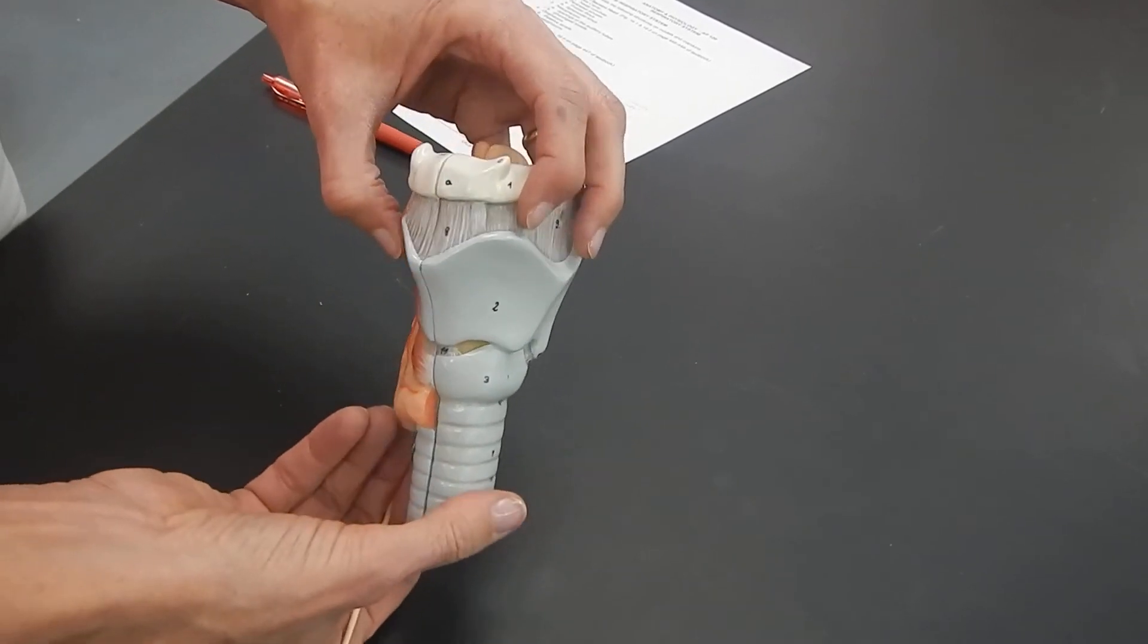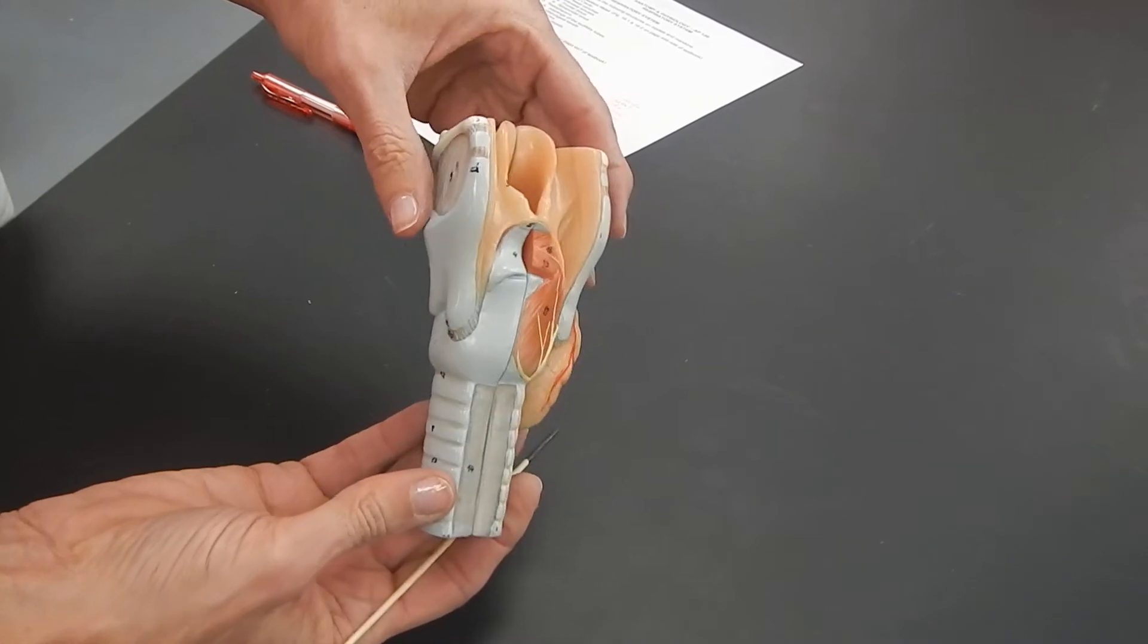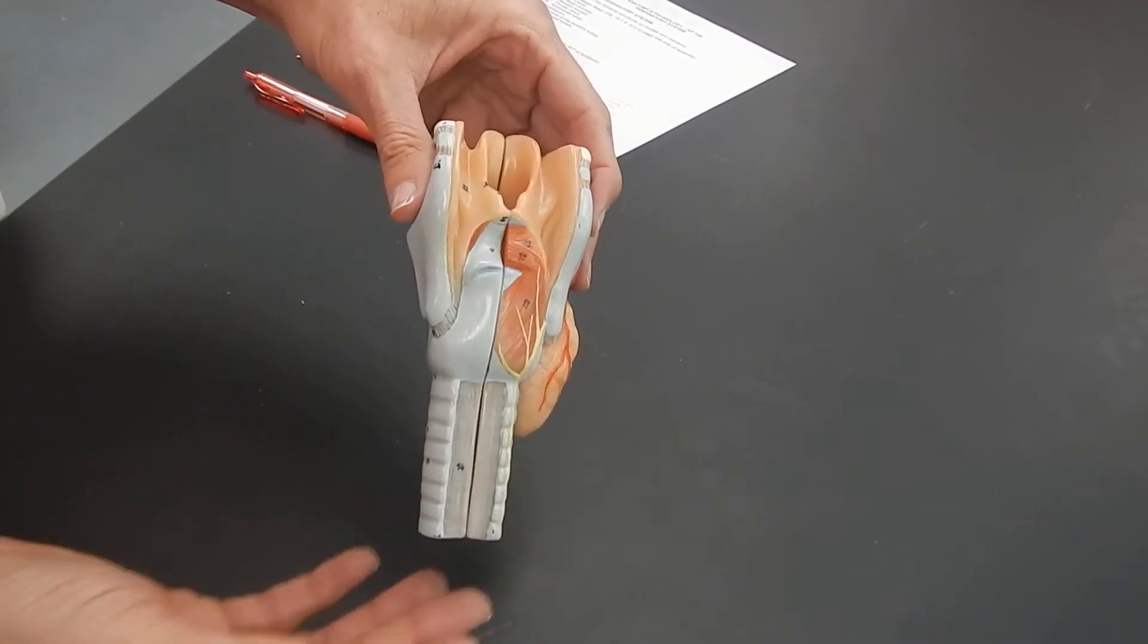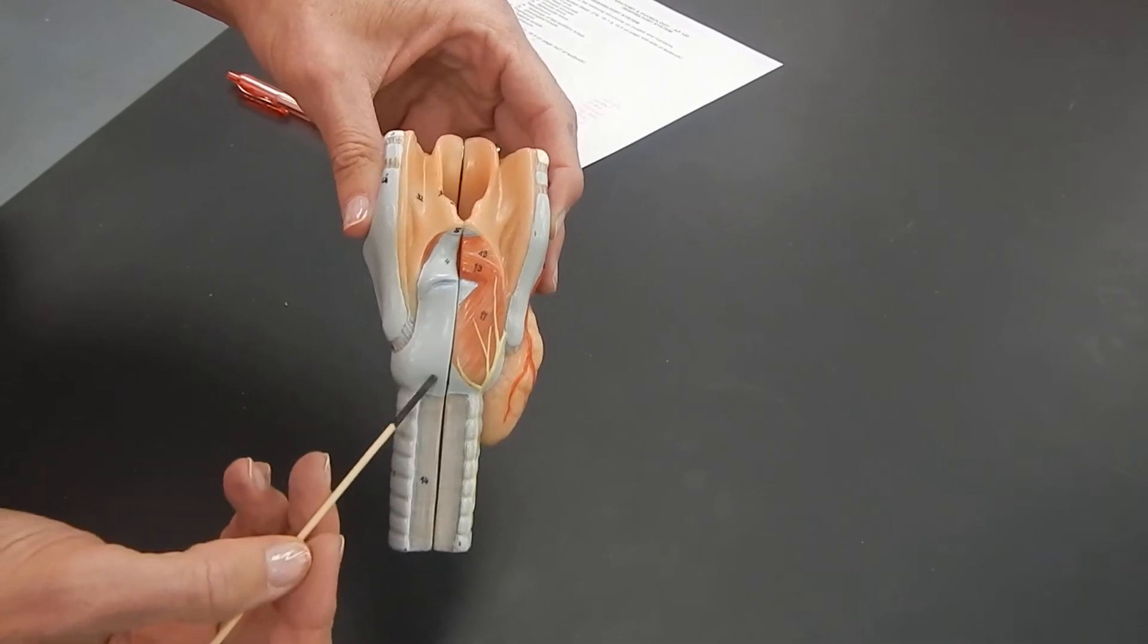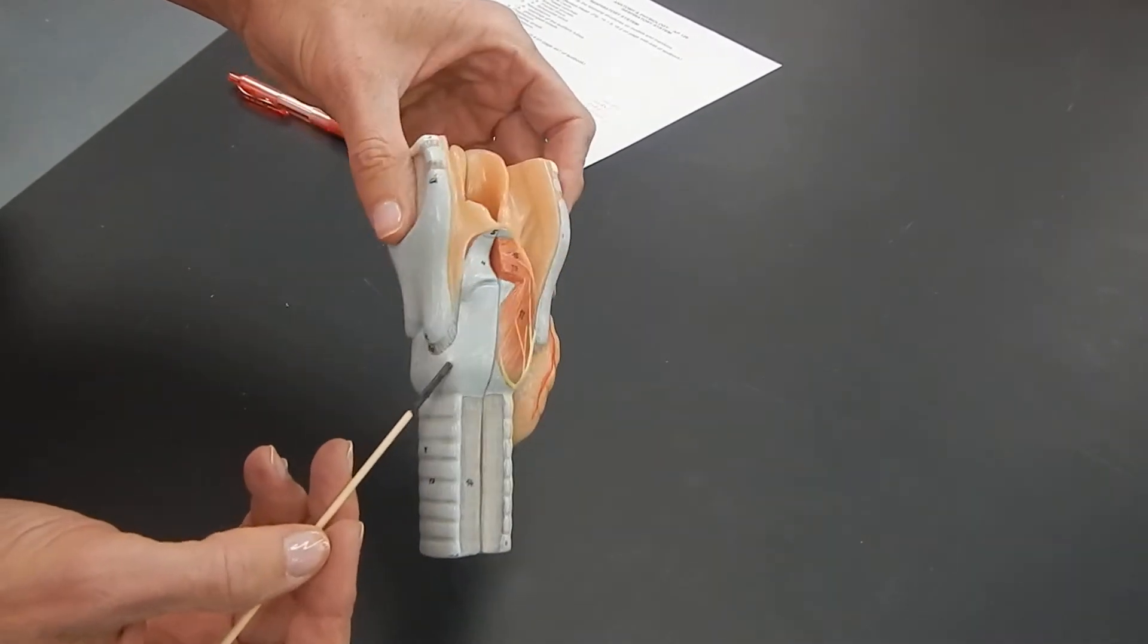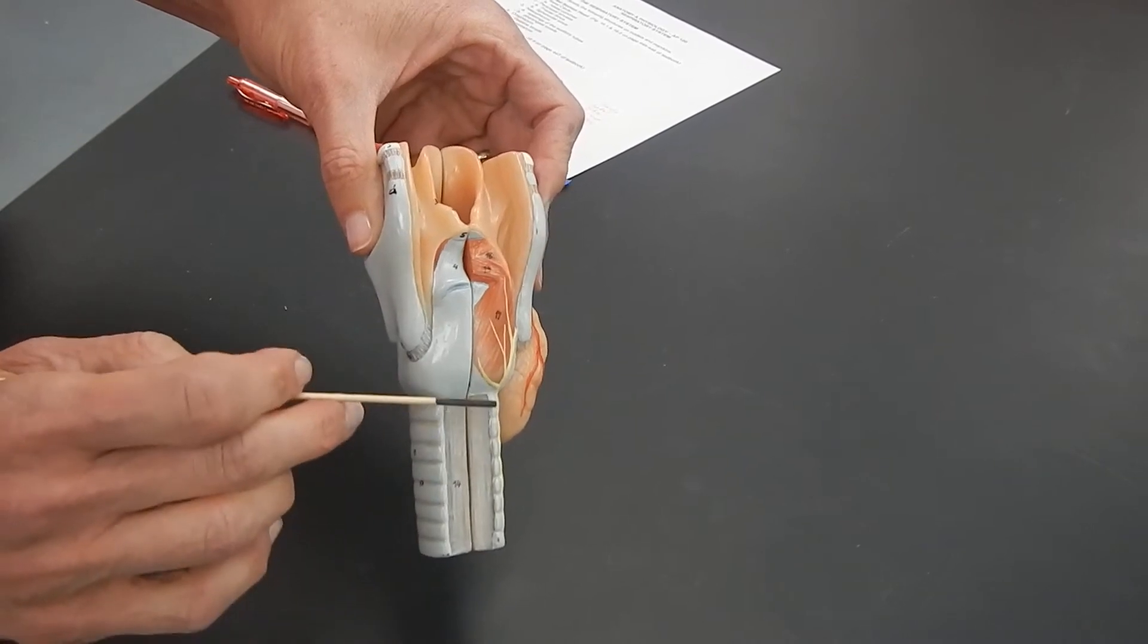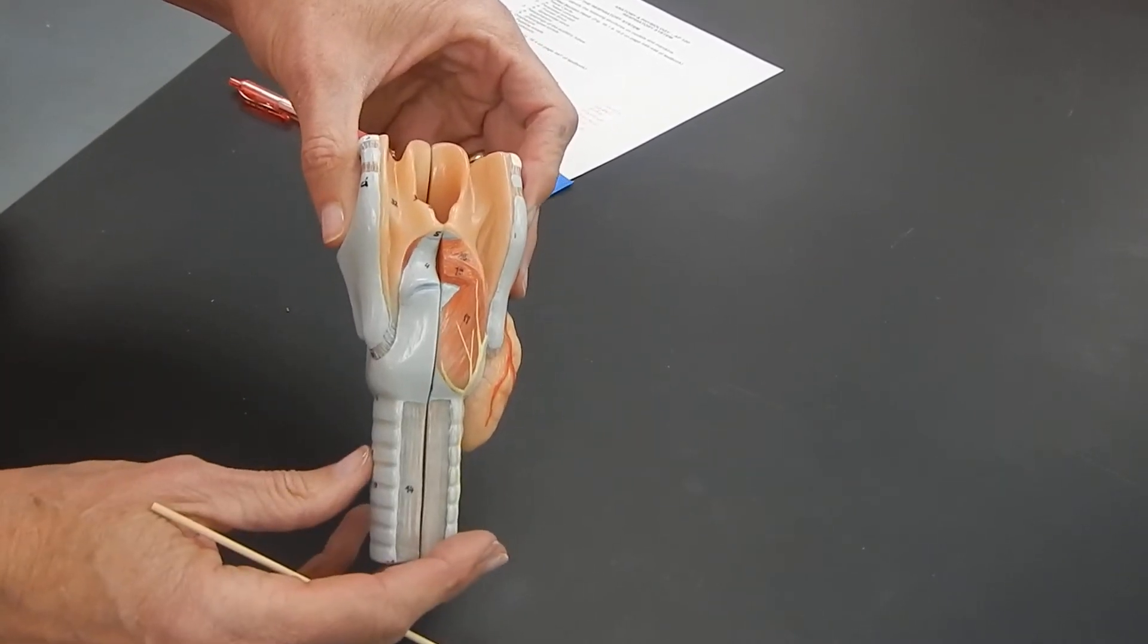If we look at the posterior aspect of the larynx, you can see that in the back, the cricoid cartilage looks a little bit bigger from behind. But it is the last of the laryngeal cartilages before we get to the trachea.